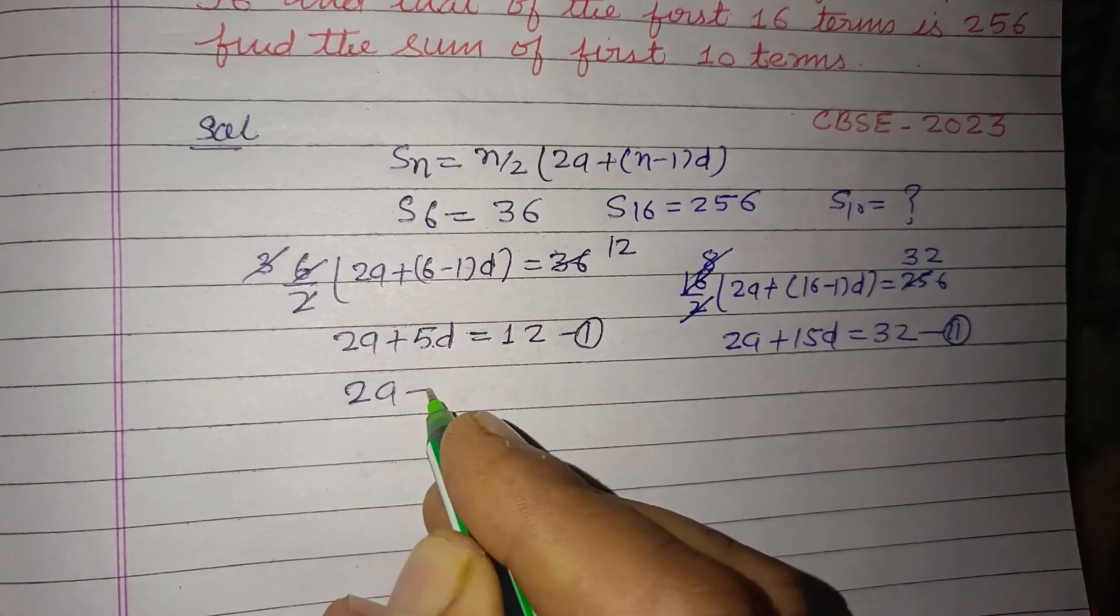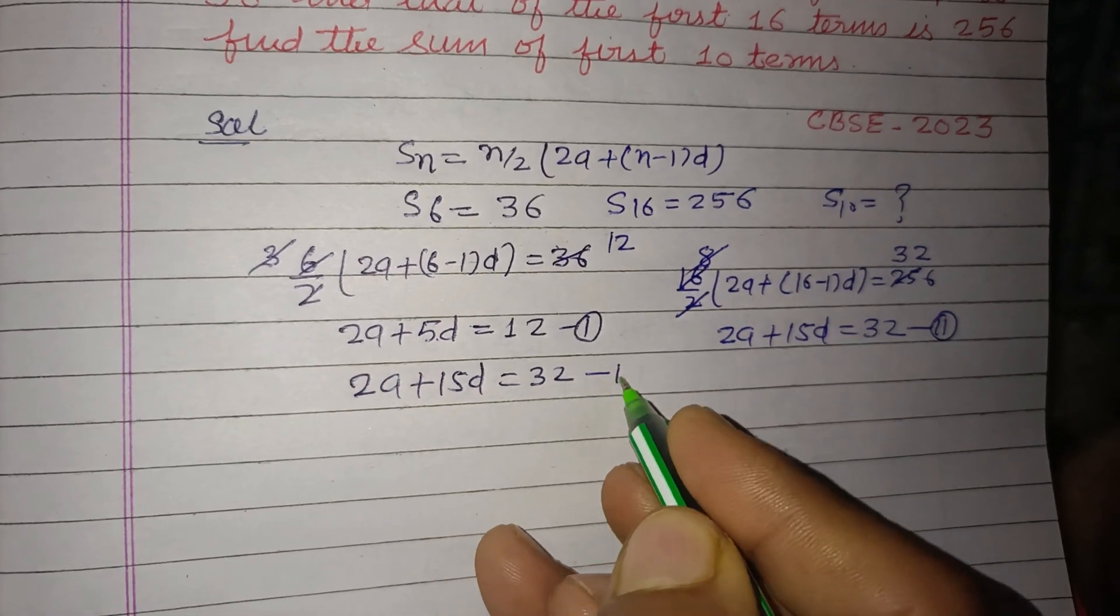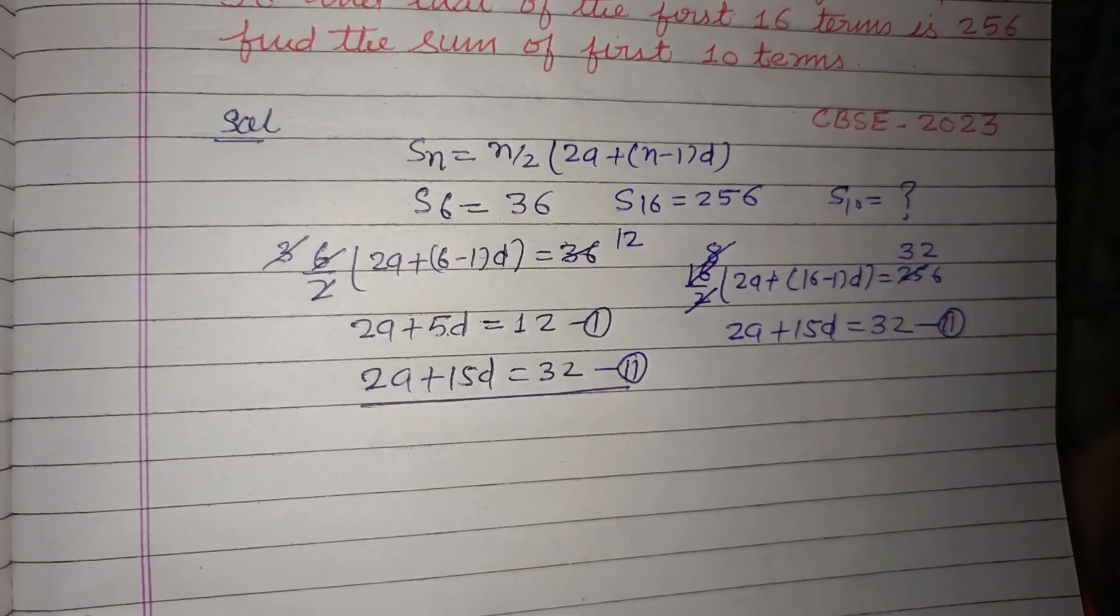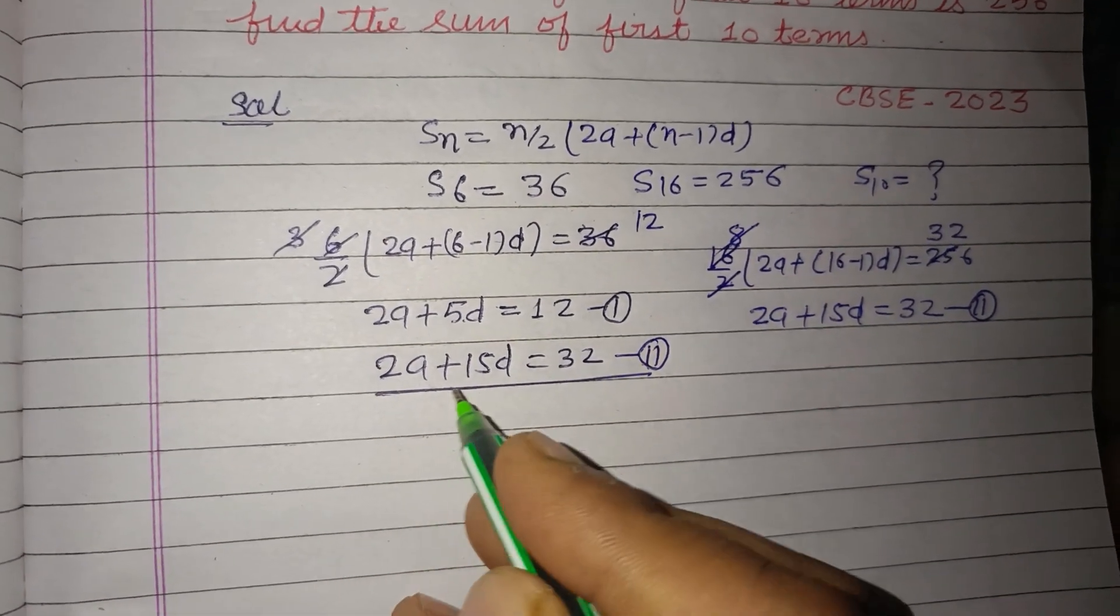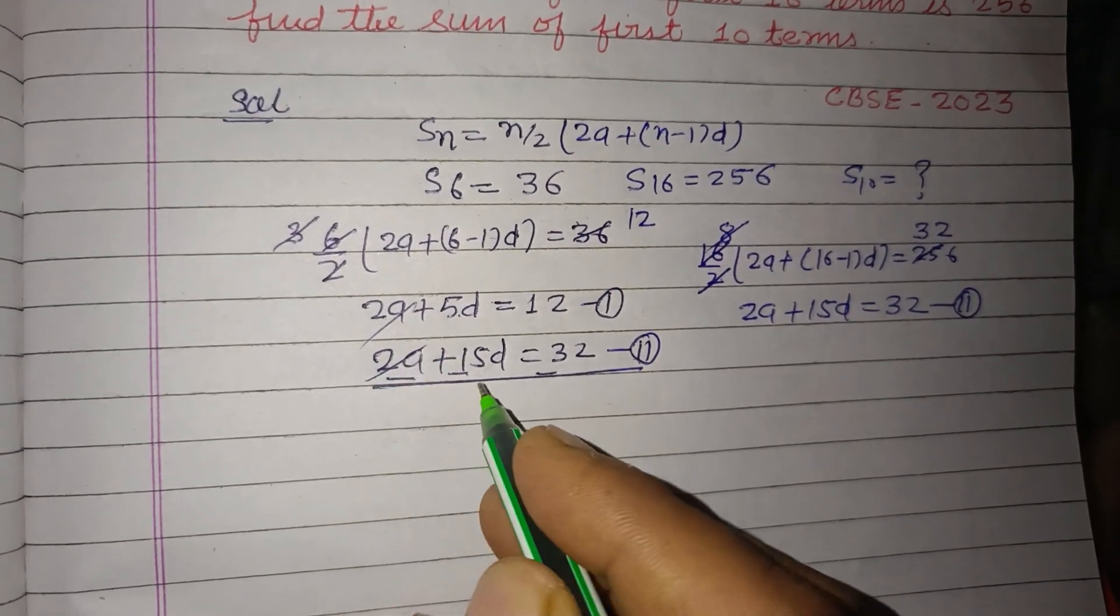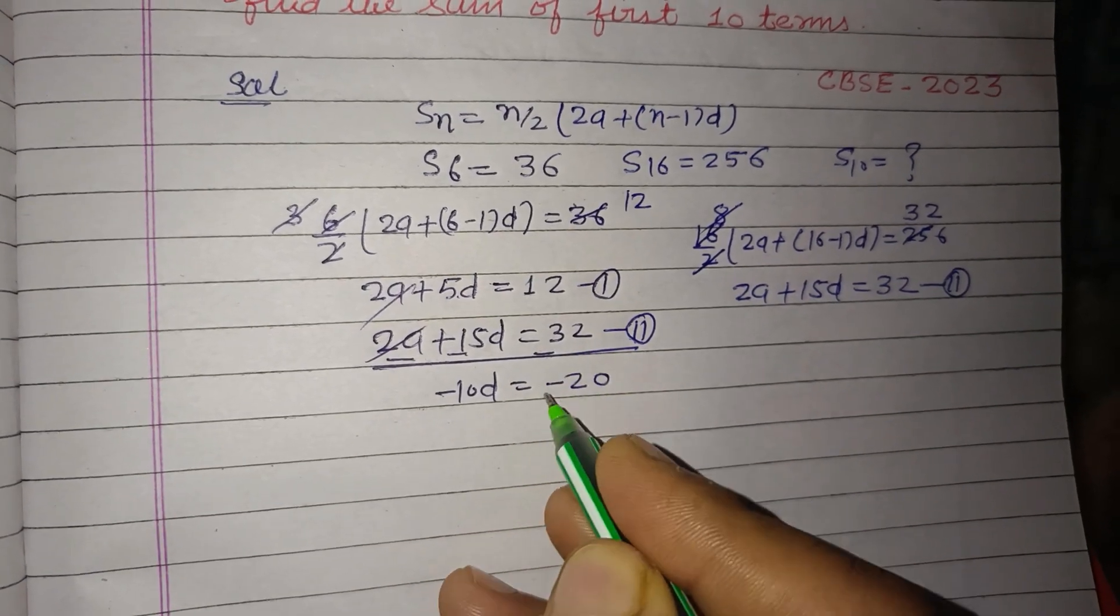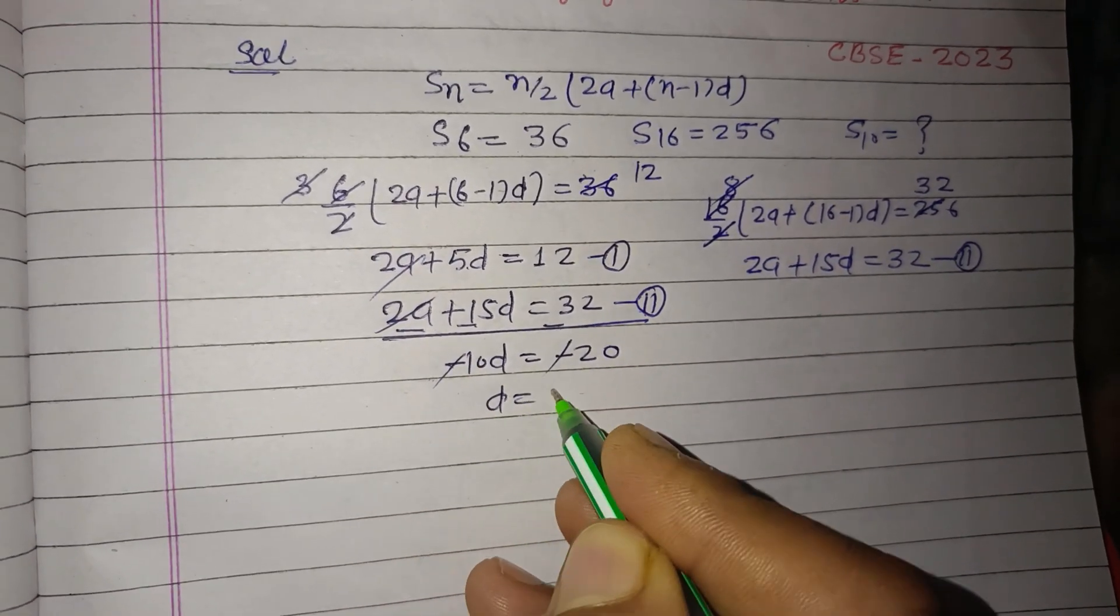So subtracting we can get the value of a and d. Subtracting these equations: 2a to 2a cancel, minus 10d equals minus 20, so d equal to 2.